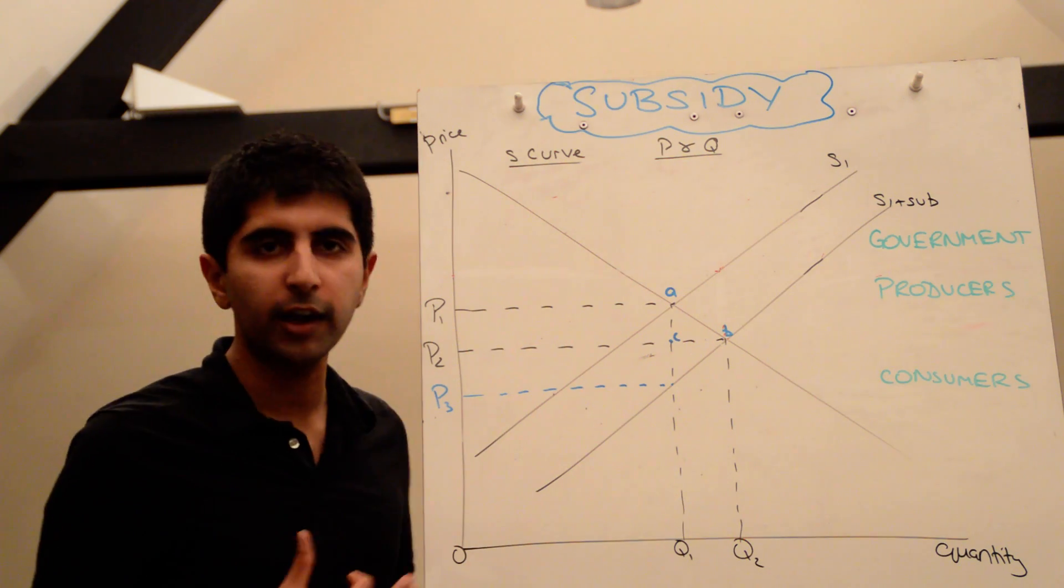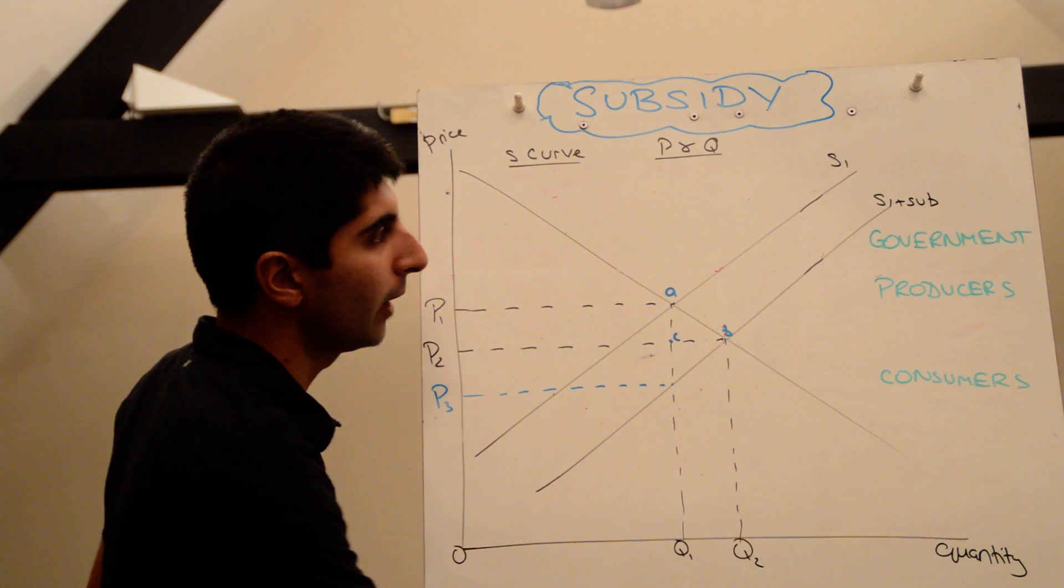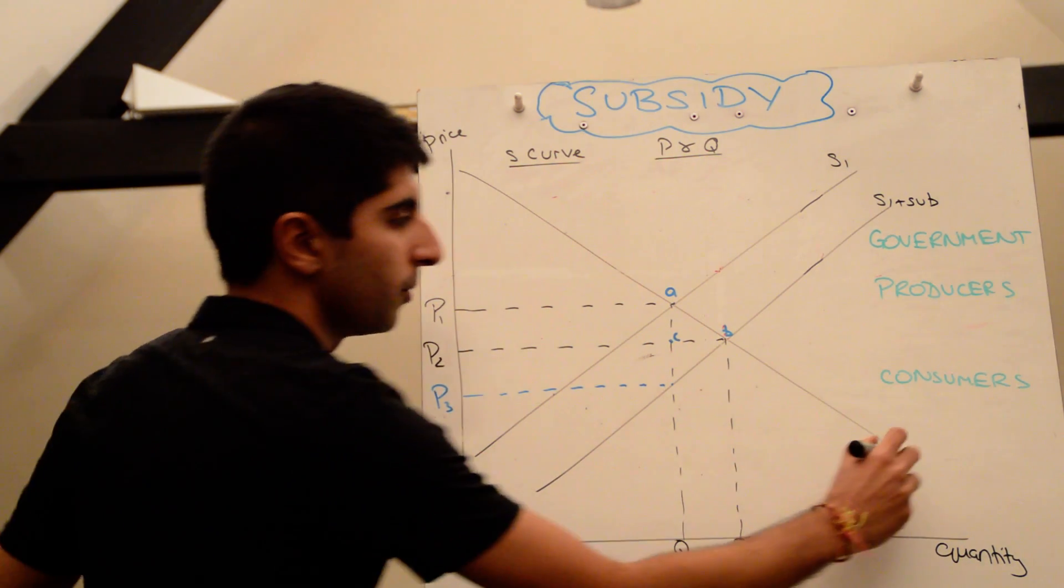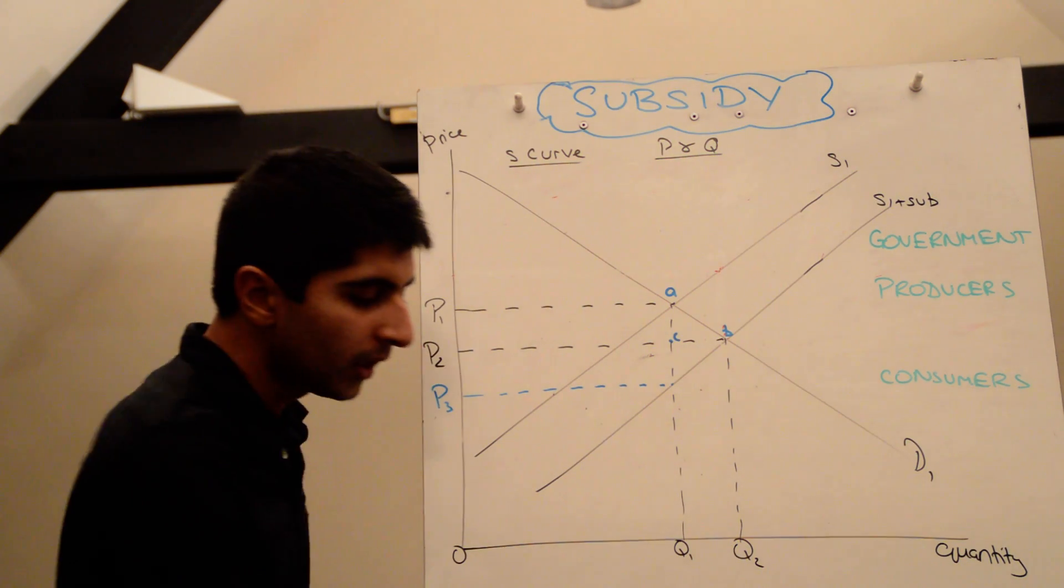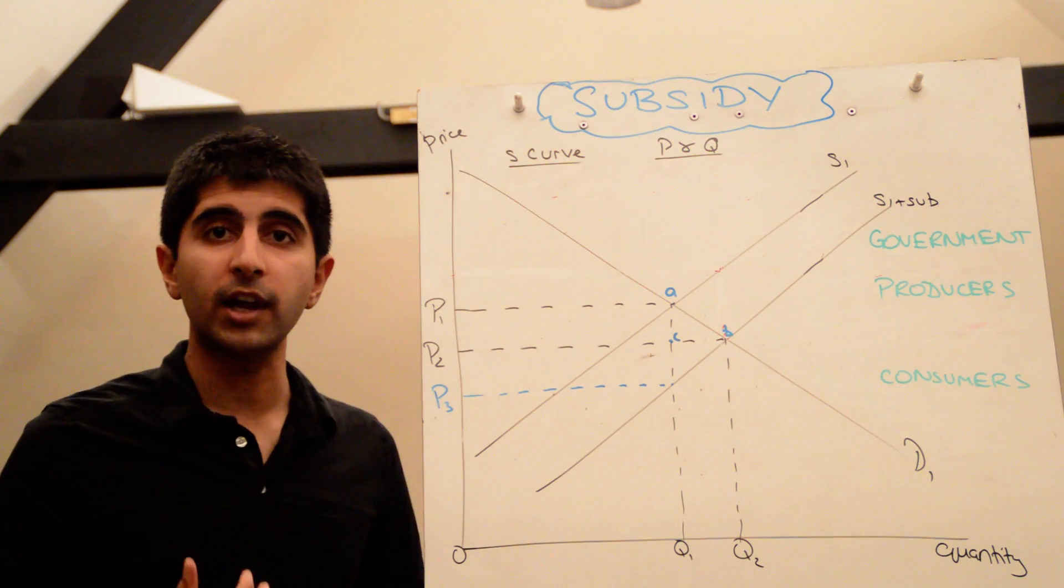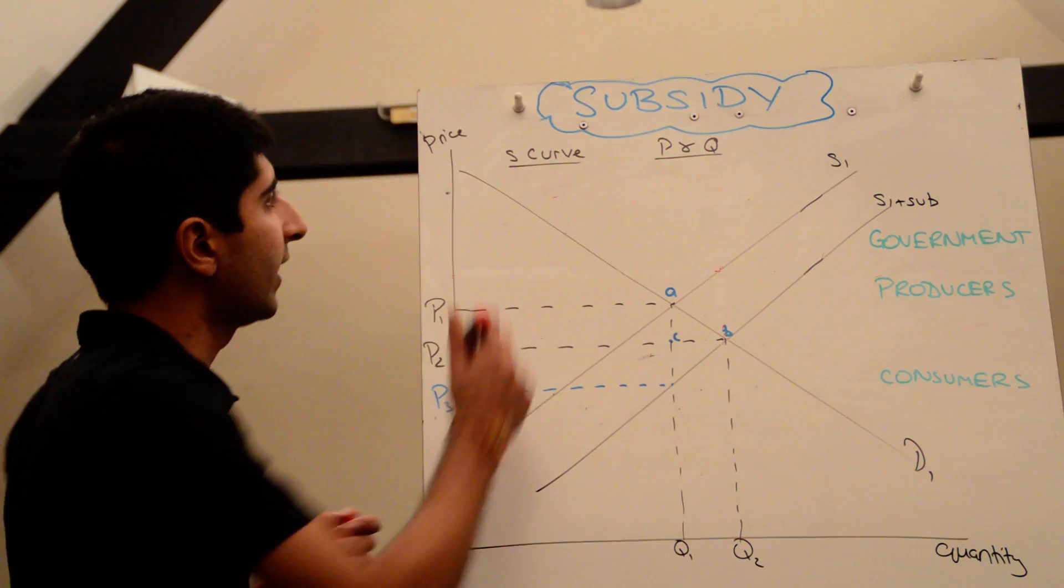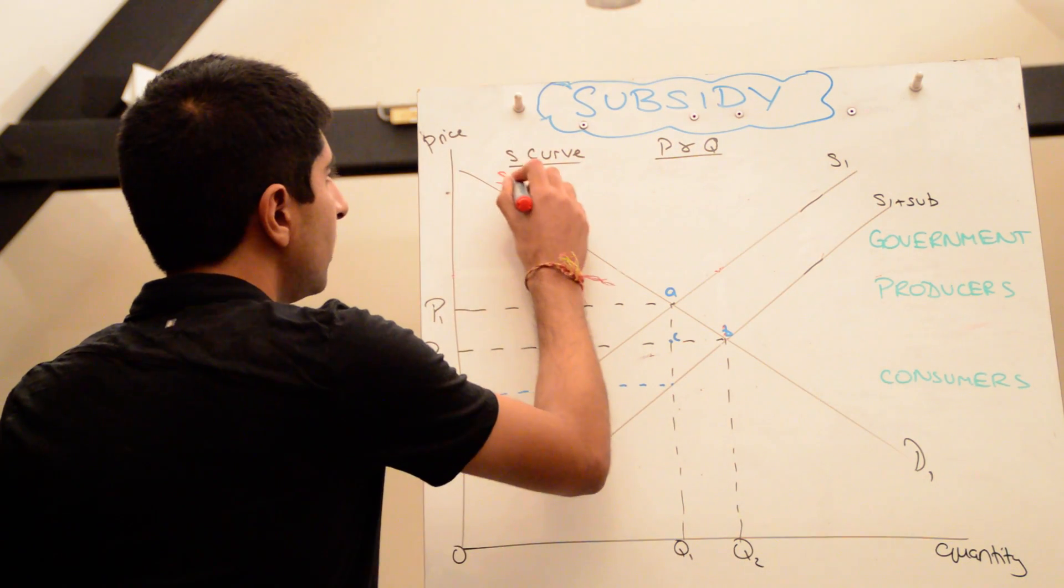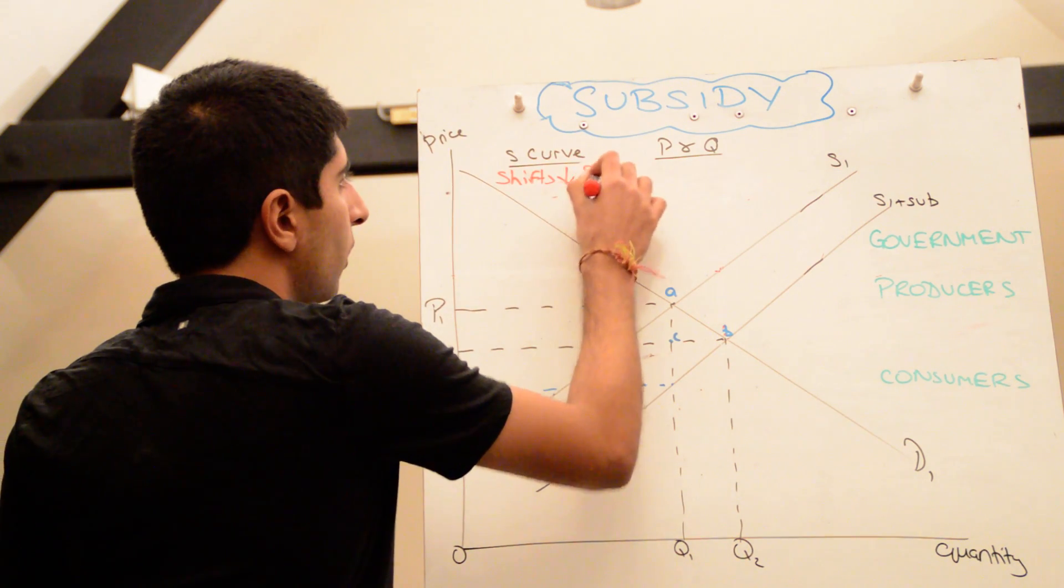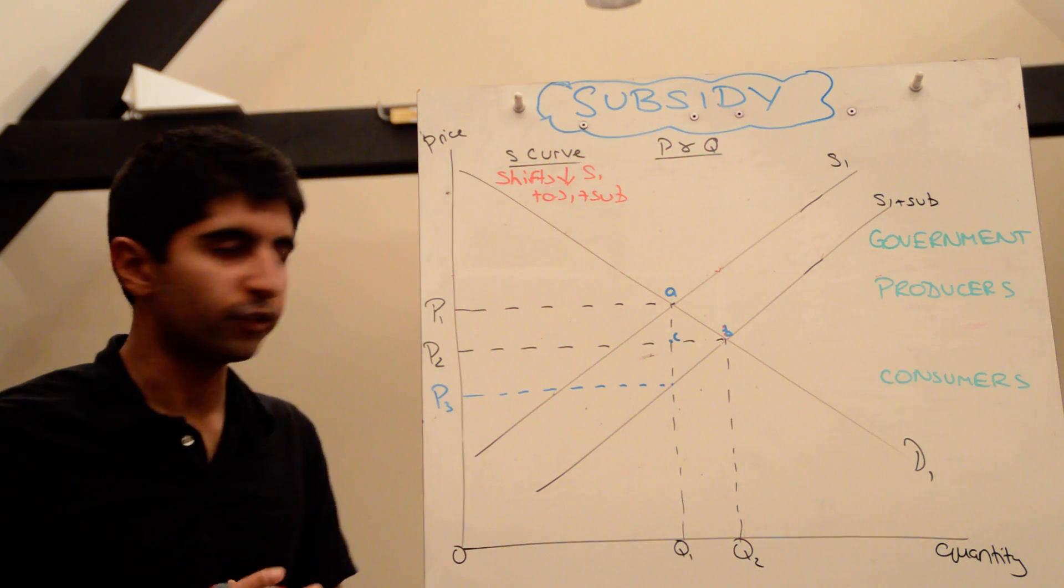What we're going to do is dissect the diagram down, we're going to actually isolate what a subsidy does in a market and look at the effect it has on government, producers and consumers. Let's get started here by looking at the very basics. We know that a subsidy reduces the cost of production for producers, therefore shifting the supply curve downwards. So supply curve shifts downwards from S1 to S1 plus sub, lowering the cost of production.